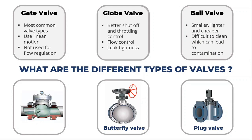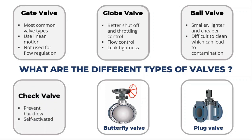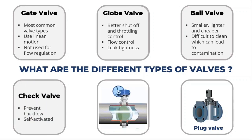Ball valves are challenging to clean, which might result in contamination, and they are not appropriate for applications that need constant throttle control. A check valve is used to stop backflow. These valves are normally self-activated, opening when media flows through the valve in the desired direction and closing when flow reverses.